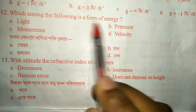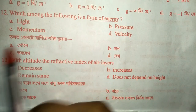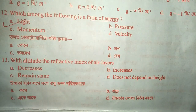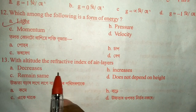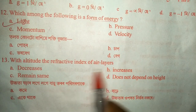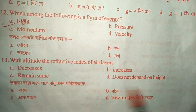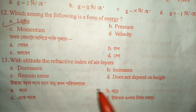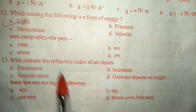Question number twelve: which of the following is a form of energy — pressure, velocity, momentum, or light? The answer is option A — light — because light is a kind of energy. Question number thirteen: with increasing altitude, the refractive index of air layers does what? As we increase height, the refractive index decreases.